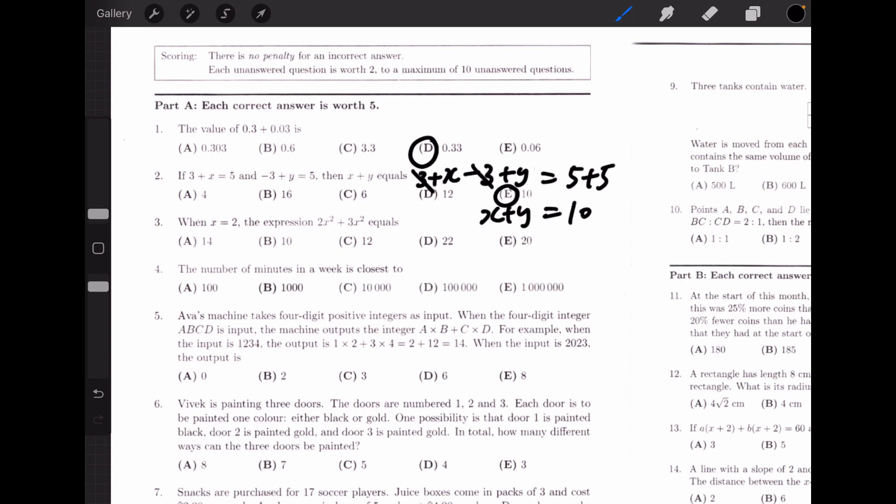Number 3, when x equals 2, the expression 2x squared plus 3x squared equals 2 times 4 plus 3 times 4, which equals 8 plus 12 equals 20.